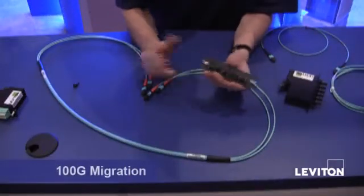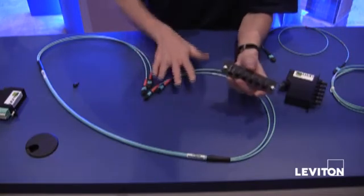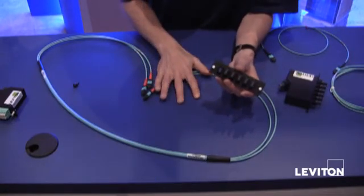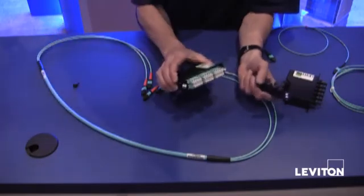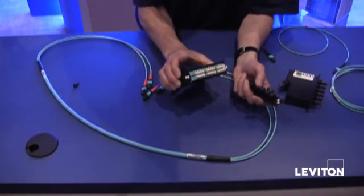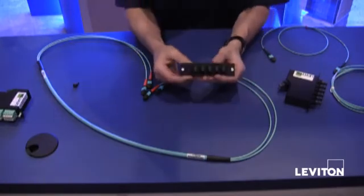Then last but not least is migrating to 100 gig. It's very simple to do. Use the same 24 fiber trunk. All you need to do is, if you're using 10 gig, take out your LC module that you have here and put in your adapter plate.